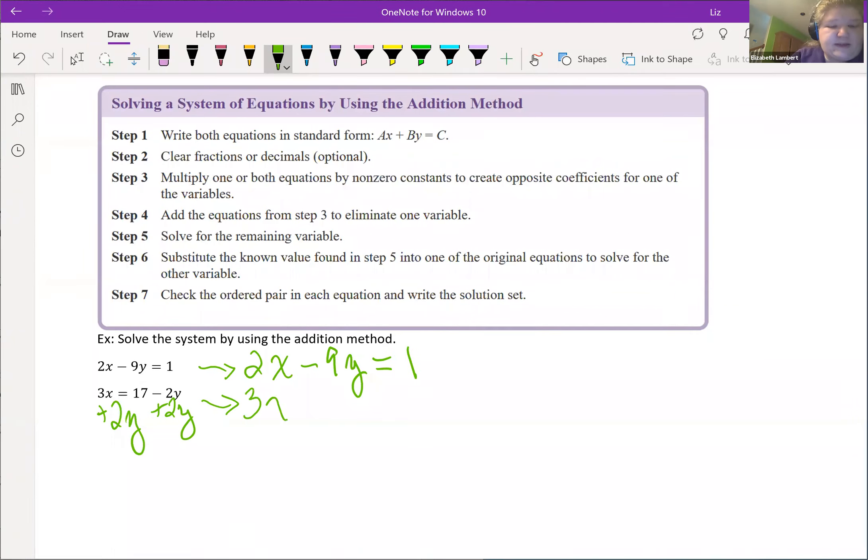Let me use a second color. 3x's plus 2y's equals a huge 17.